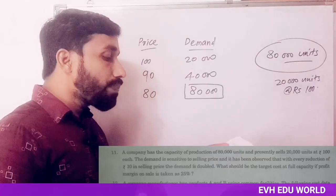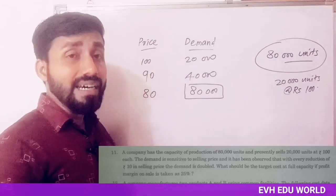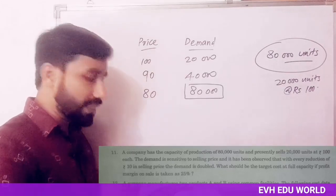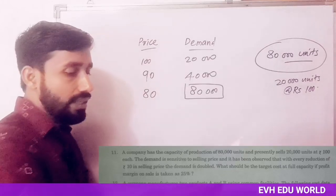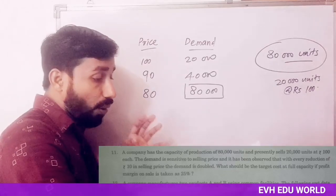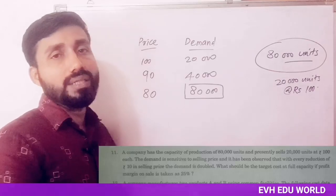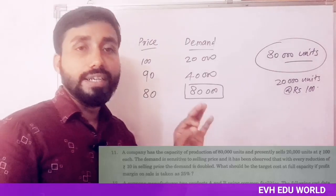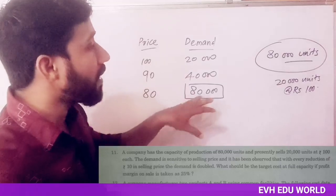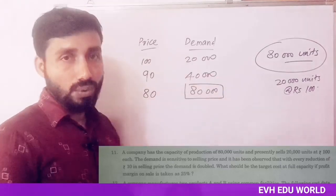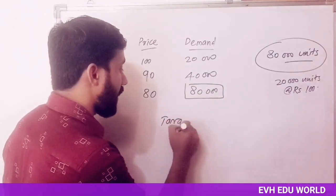What should be the target cost? At full capacity the production is 80,000 units. If the profit margin on sale is taken as 25%, we need to find the target cost. The price at full capacity and the cost is the target cost we want to determine.